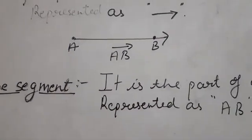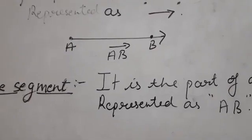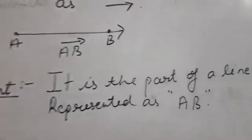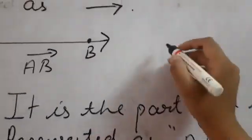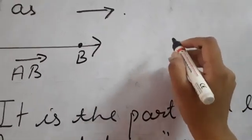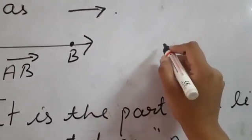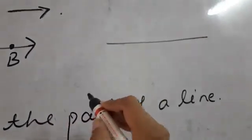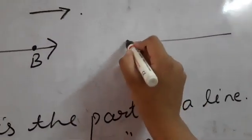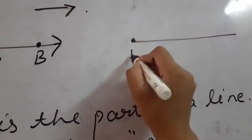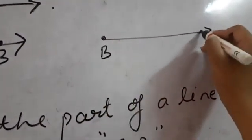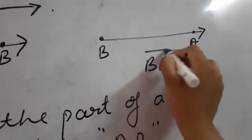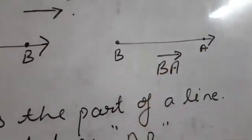If I ask you to draw ray BA, you will draw the same shape but mark this point as B and this point as A — the starting point is B and it moves in the direction of A. Write it as BA with an arrow over the letters.